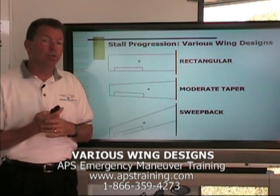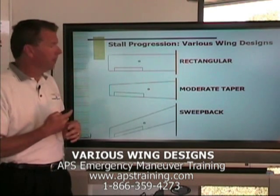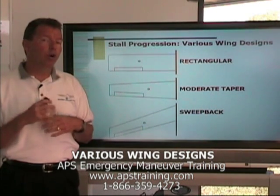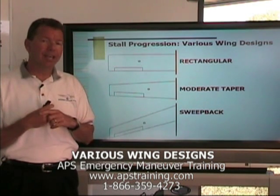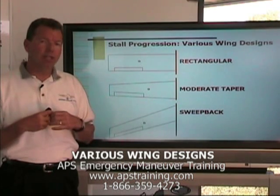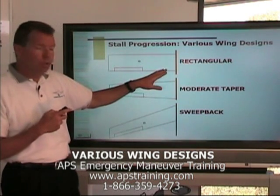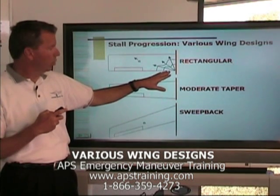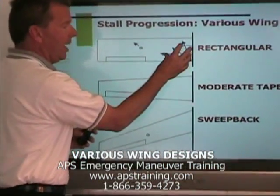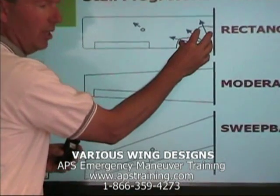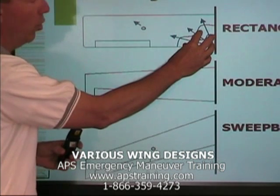As we begin to increase angle of attack — which is going to change or affect our lift being produced by the wing — and we approach critical angle of attack, we know that at certain angles of attack we'll begin to have boundary layer separation. Typically on a rectangular wing, this is going to happen right about the root area, the wing root area.